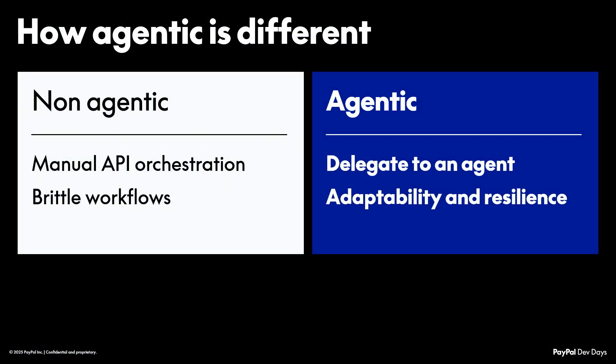In a non-agentic world, you as a developer are spending all your time thinking through everything about API orchestration, your workflows, designing. You spend a lot of time in that aspect. In an agentic world, you delegate. Your design principles are fundamentally different. You have some sort of a protocol or a server on the other side, and that's how you are talking and communicating.